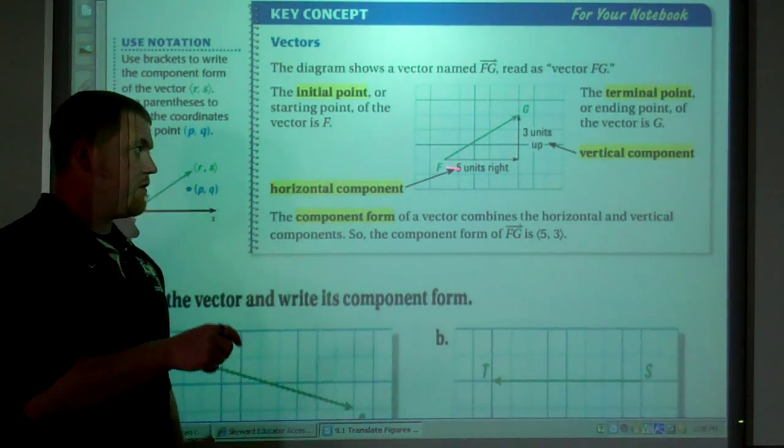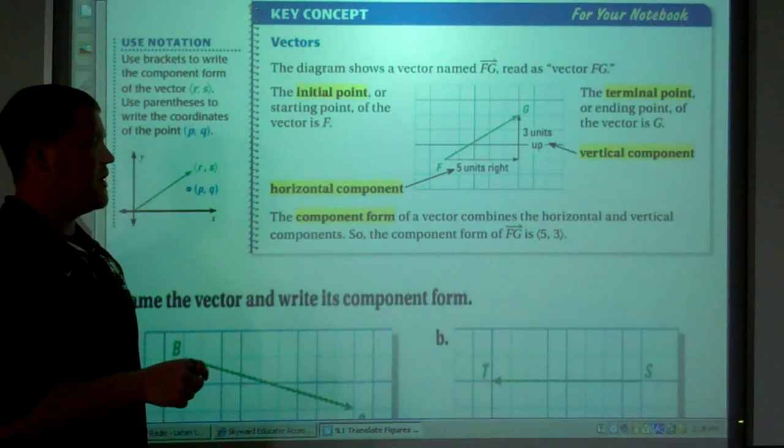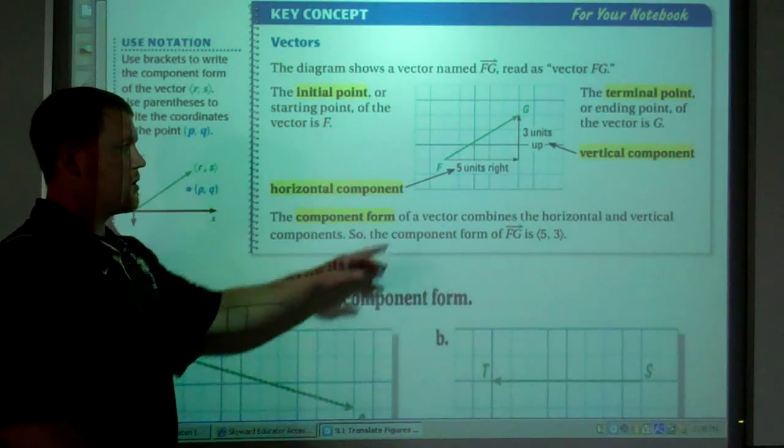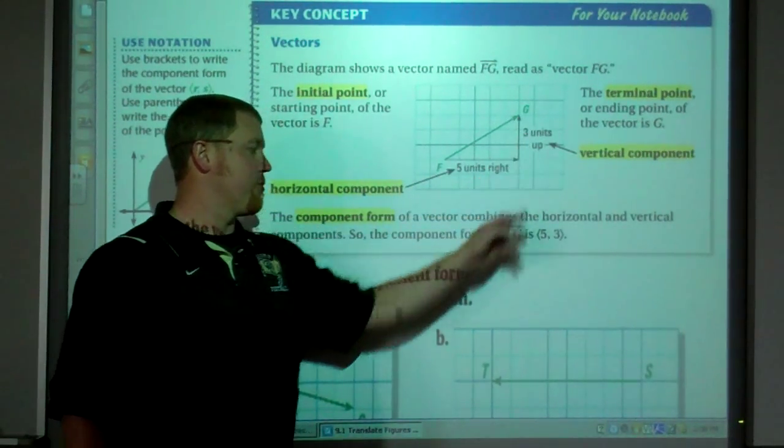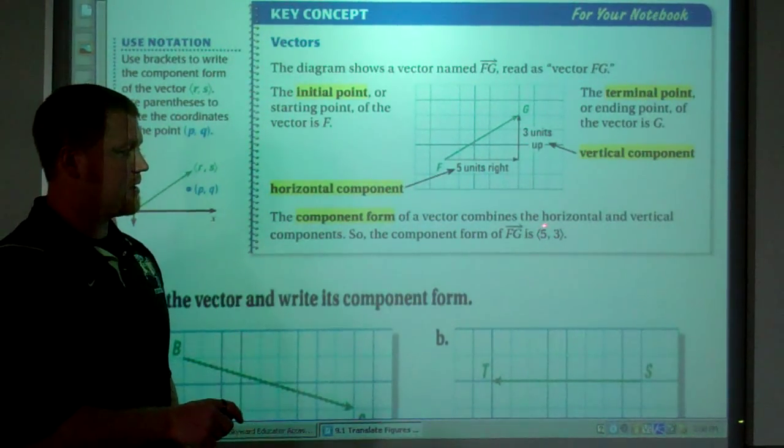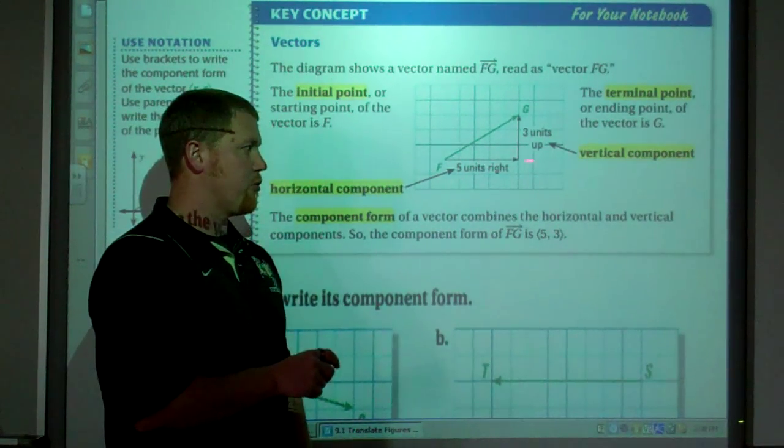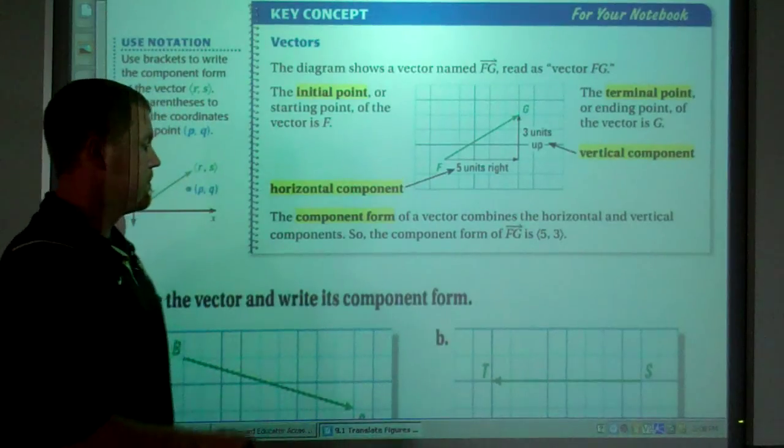The component form for vector FG combines the horizontal and vertical components, the five and the three. And we write it in those brackets: five comma three. So you put the horizontal, the run, and the rise.